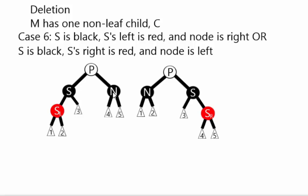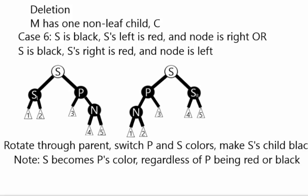In this situation, we have our node. The parent's color actually doesn't matter, which is why it's colored white here. We have the sibling, its left is red, or the sibling's right is red. We rotate through the parent and switch the parent's colors with the sibling. So what that means is that the parent becomes black and the sibling takes on whatever color the parent was.